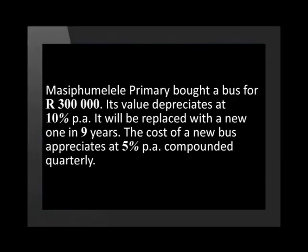Let's look at an example together. Masipumelele Primary bought a bus for R300,000. Its value depreciates at 10% per annum. It will be replaced with a new one in 9 years. The cost of a new bus appreciates at 5% per annum, compounded quarterly.